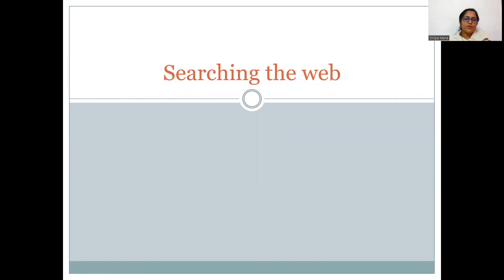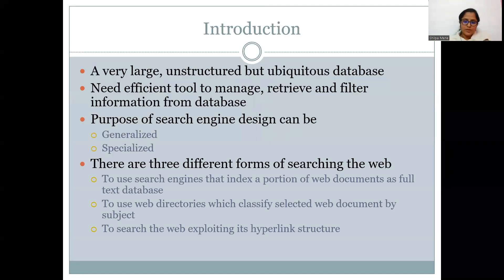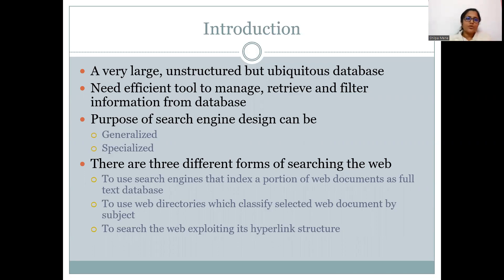Hi everyone. The topic for today's discussion is web searching. An information retrieval system has to deal with various types of data, which can be either in the form of text, multimedia data, or data present on web pages. In short, the data which an information retrieval system deals with is a very large, unstructured but ubiquitous database. So it has to have some efficient tool to manage, retrieve and filter information from that database, which will map the content in a semi-structured way.